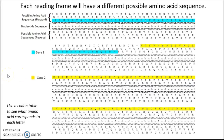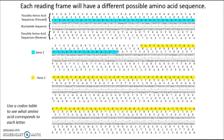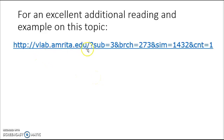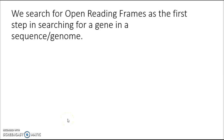Each section of DNA will have six possible reading frames — three on the top strand and three on the bottom strand. We have a nucleotide sequence, then three potential amino acid sequences on the top strand and three potential amino acid sequences on the bottom strand. Each depends on which position you begin calling a codon. There's an excellent reading and example on this topic at a particular website I encourage you to look at and try to work through on your own. From the topic of reading frame, we're next going to move on to the concept of an open reading frame, which is the first step in searching for a gene in a sequence or in an entire genome.